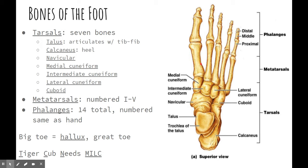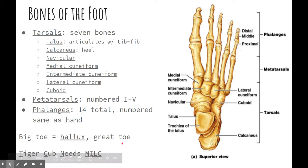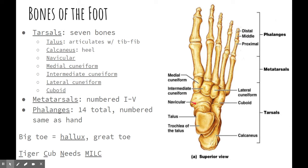It's important to note that sometimes you'll see the big toe referred to — the formal name of that is the hallux. You'll also see it called the great toe. For the tarsals, the mnemonic device that sticks with me is 'tiger cubs need milk,' but milk is misspelled. Tiger: talus is T, cub: calcaneus is C, needs: navicular is N, then medial, intermediate, lateral cuneiform, and the cuboid bone.